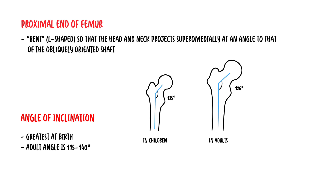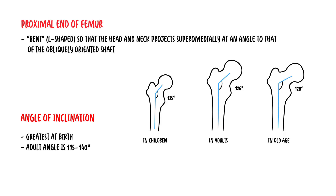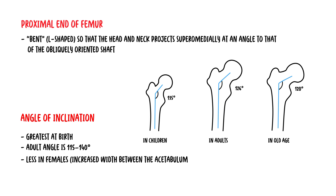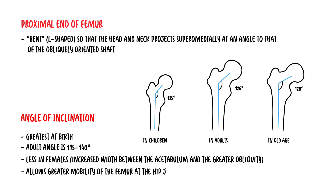The angle of inclination also increases with age, contributing to an increased risk of fracture. In females, the angle of inclination is less due to the increased width between the acetabula and the greater oblique orientation of the femoral shaft. The angle of inclination allows greater mobility of the femur at the hip joint.